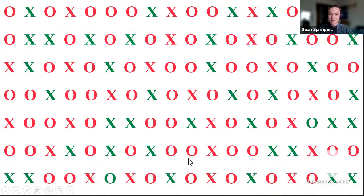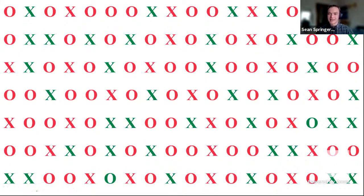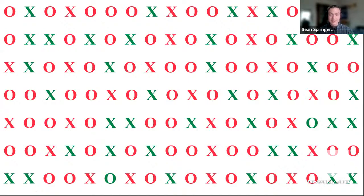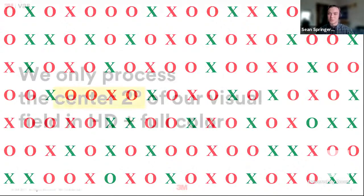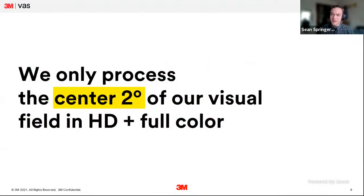Some people saw one green 'O,' some saw the other, or both — it's a little bit of a trick question since I didn't tell you there were going to be two of them. The point I'm trying to get across is that it's very easy to miss parts of a design entirely unless you draw your viewer's eyes directly to that part of the field. And one of the reasons why it's so easy to miss something is because we don't process as much as we think we do.